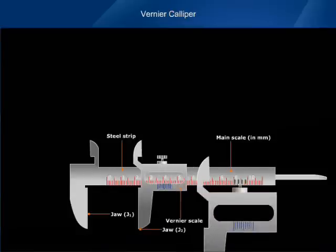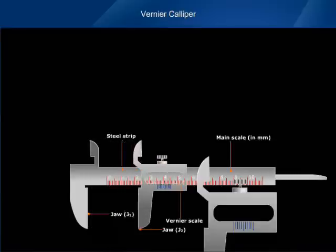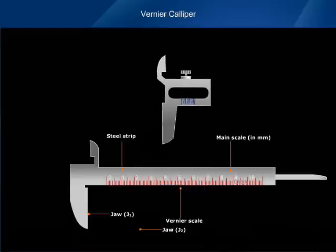This strip is called the vernier scale. Generally, the vernier scale has 10 divisions marked on it. The vernier scale can be fixed at any position on the main scale with the help of a screw.